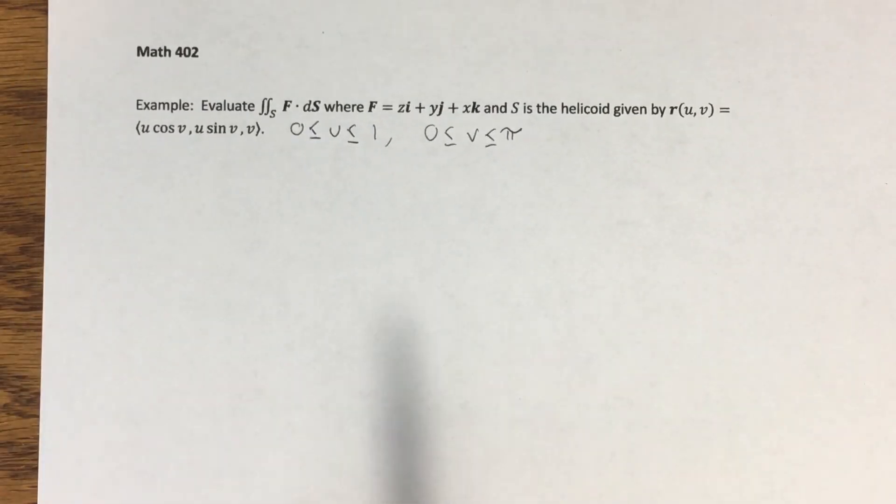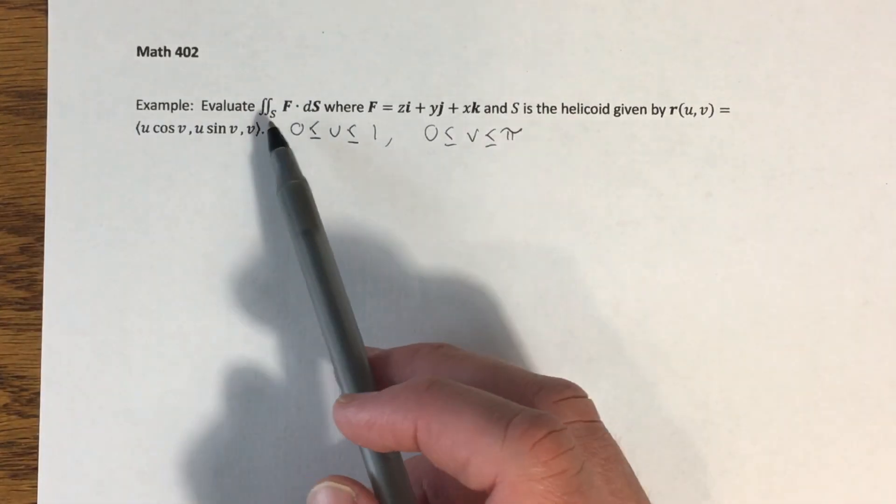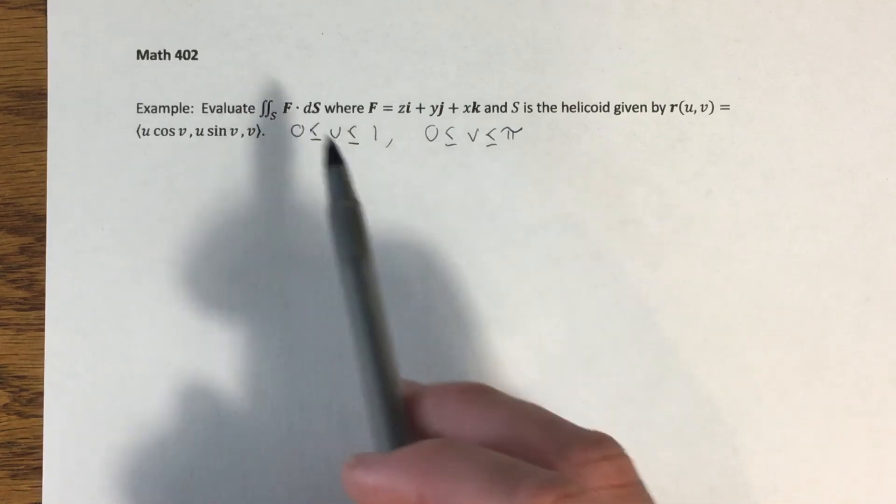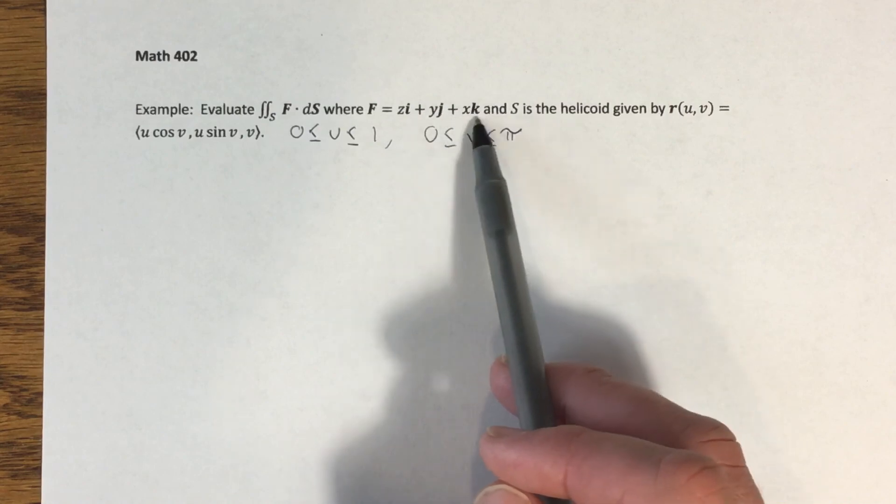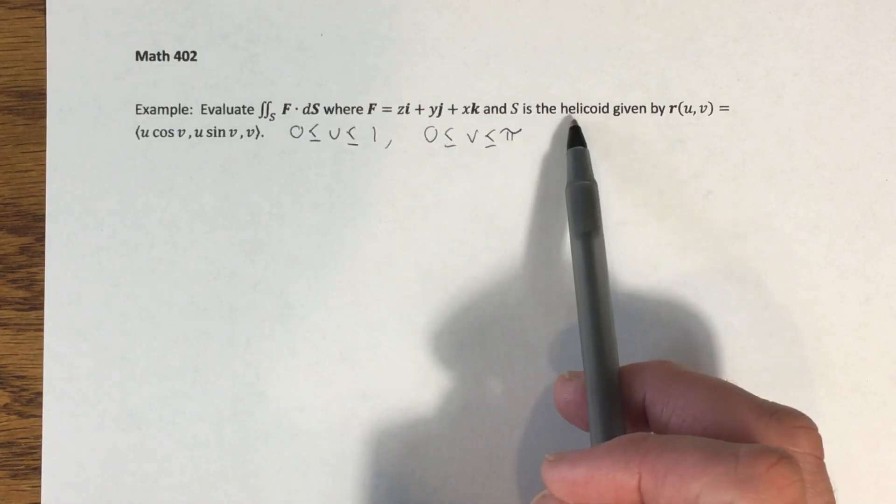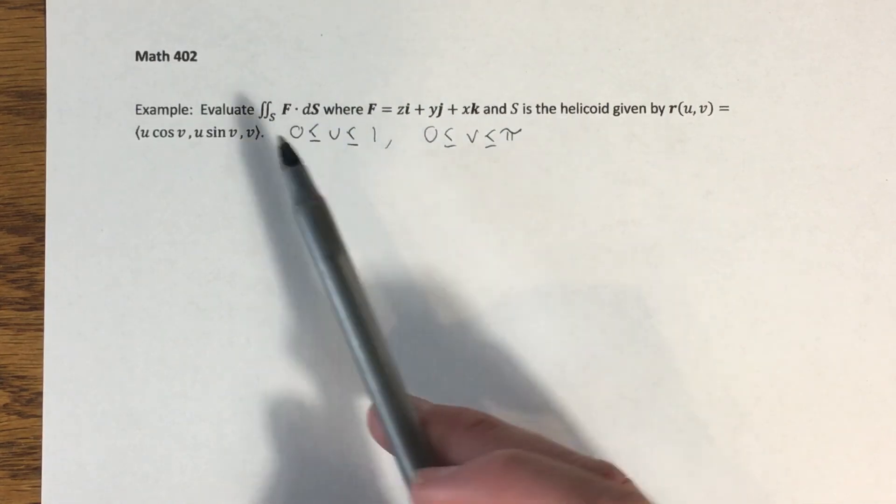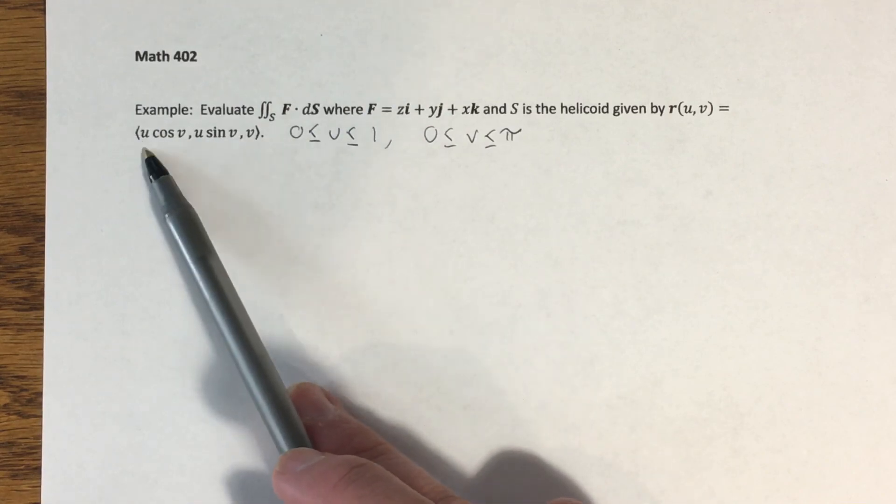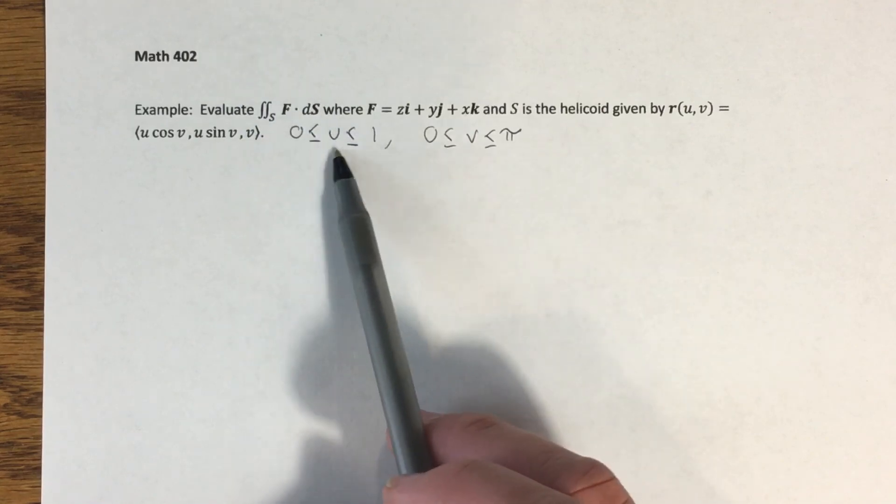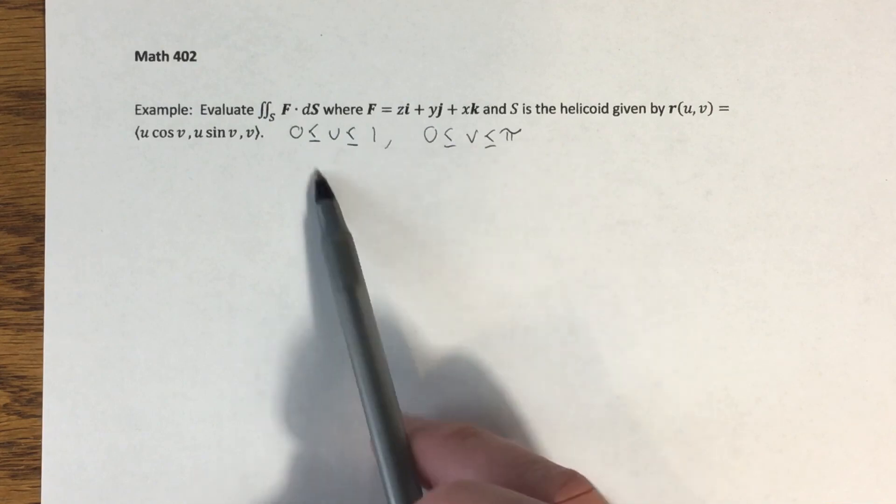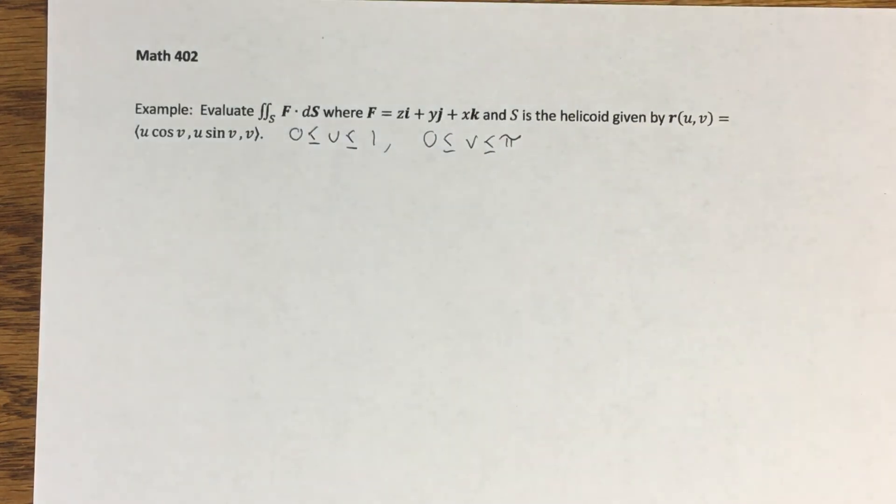So we're going to do this one in the next video, but I want to at least set this up here. For this example, we're going to evaluate a surface integral of F dot D S where F is this vector field Z I plus Y J plus X K. And S is the helicoid that we have worked with before given by this parametrization U cosine of V U sine of V, V. When I typed this, I forgot to put the intervals for U and V. So I wrote them in, U goes from zero to one V goes from zero to pi. We'll figure this one out in the next video.